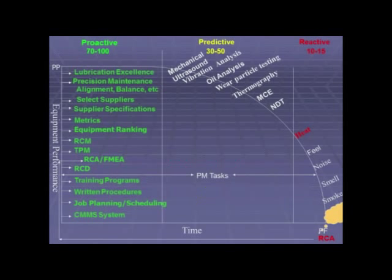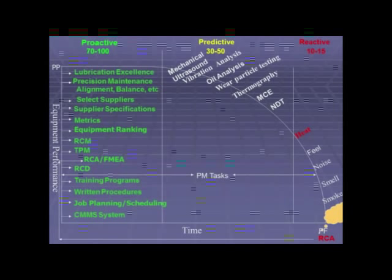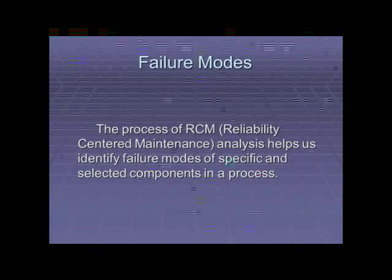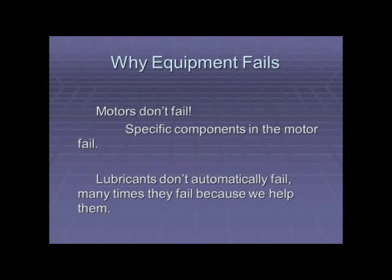If we do some of these tasks in the proactive area, we can make our equipment last three to eight times longer. Up here we have lubrication, precision maintenance, and selecting the right suppliers. There's a whole training program around this technology. Failure modes — this program is developed around Reliability Centered Maintenance, which is an analysis process that identifies equipment components, looks at specific failure modes, and develops a maintenance strategy based around those failure modes.